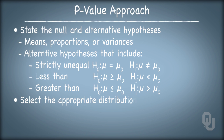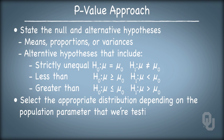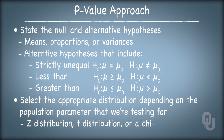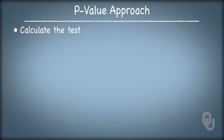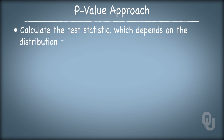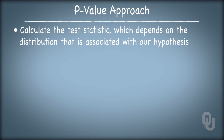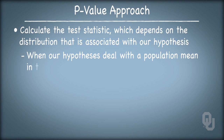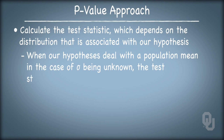Next, we select the appropriate distribution depending on the population parameter that we're testing for — a z-distribution, a t-distribution, or a chi-square distribution when we're dealing with parameters from a single population. Third, we calculate the test statistic, which depends on the distribution associated with our hypothesis. For example, when our hypotheses deal with a population mean in the case of sigma being unknown, the test statistic z-naught is y-bar minus mu-naught, divided by sigma over root n.